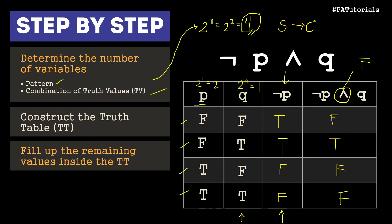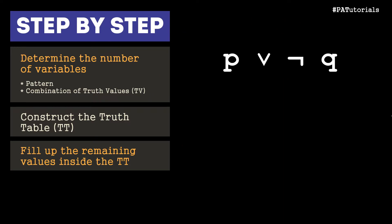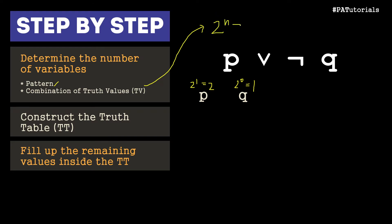Let's now proceed to our second example, which is P or not Q. Again, the first step is to determine the number of variables — we have two variables, P and Q. Q would be 2 raised to 0 which is equal to 1, and P would be 2 raised to 1 which is equal to 2. Then we determine the combination of truth values using the formula 2 raised to n, giving us 2 raised to 2 which equals 4 combinations of truth values.